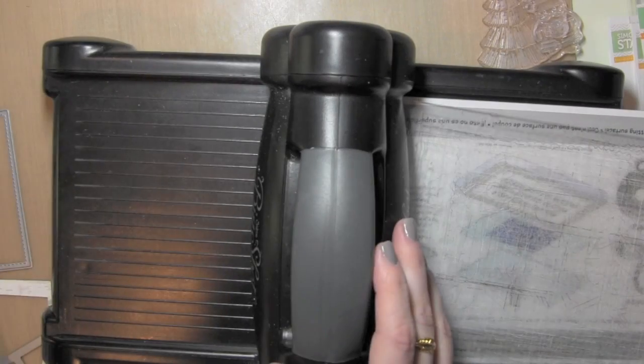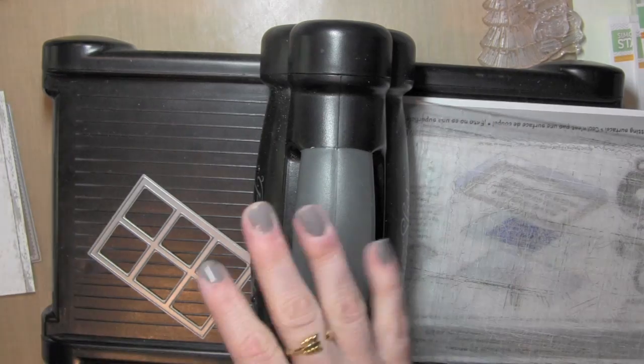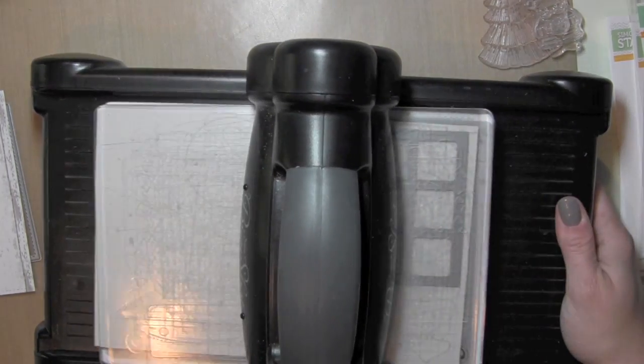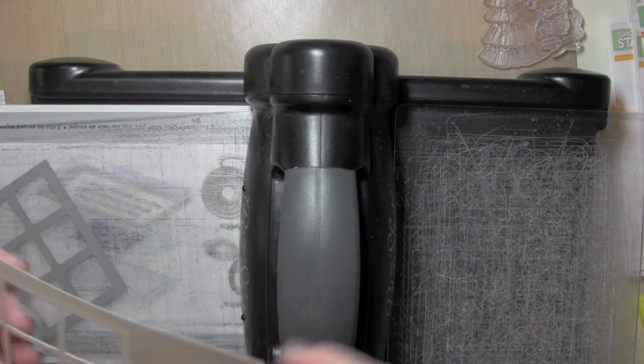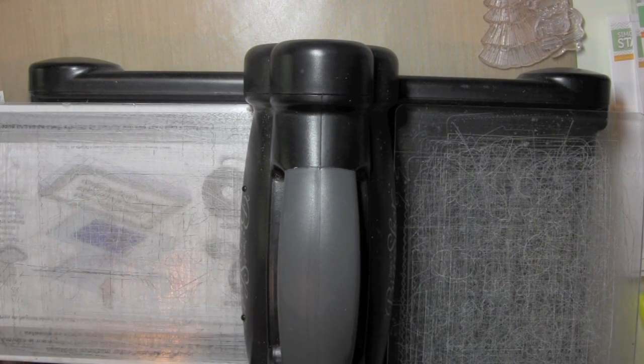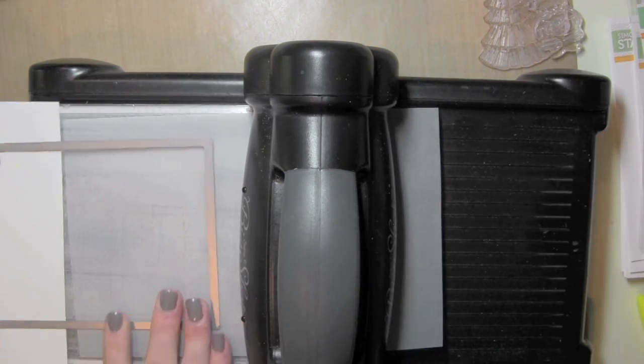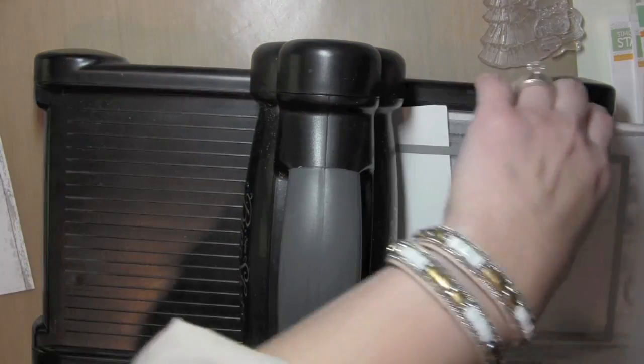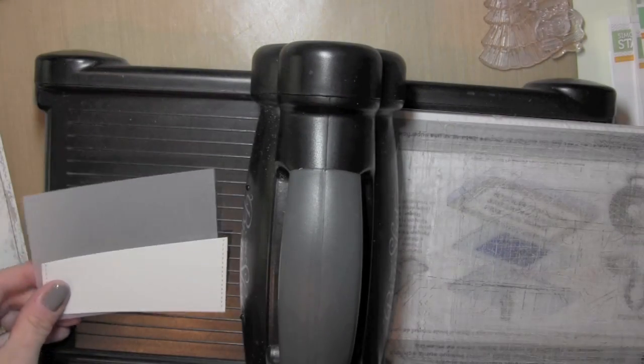I'm going to set this aside for now and cut an additional rectangle using the Pika frame. I'm going to cut that from some Simon Says Stamp fog card stock. This is because the wood grain that I cut first is going to be the outside of the house for the scene I'm creating, and I didn't want the windowsill to be the same color as the outside of the house. That's why I chose the fog colored card stock.